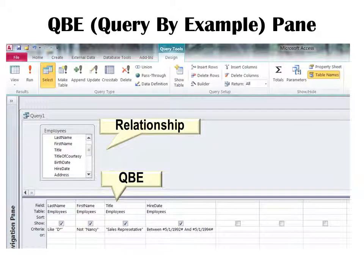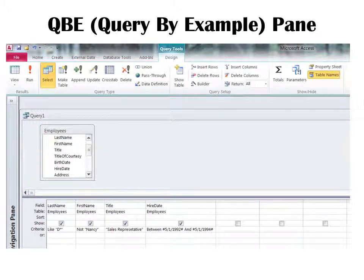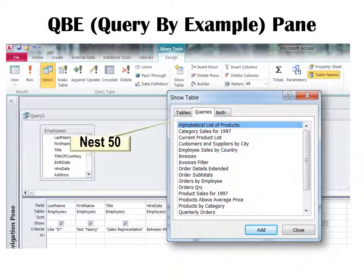Let's look at the Query by Example pane — the QBE pane — down below. Anytime I make a select query, I've got my table at the top and my QBE at the bottom. If I wanted to build a query on a query, I can do that. Simply go to Show Table, change it to Queries, and I can nest up to 50 queries.